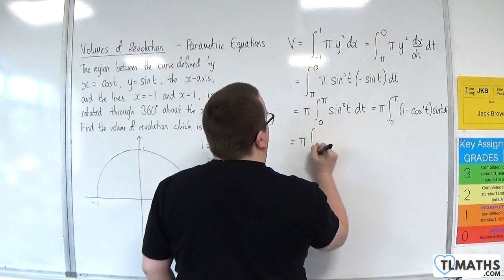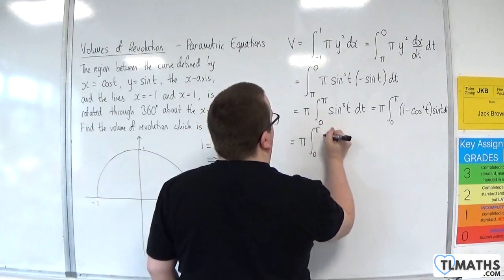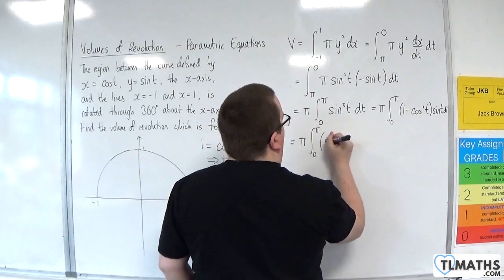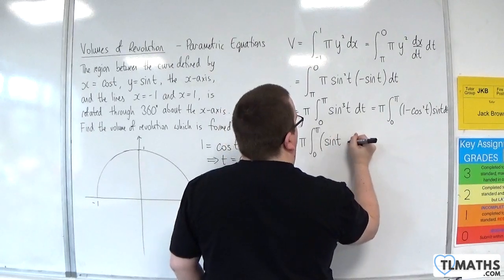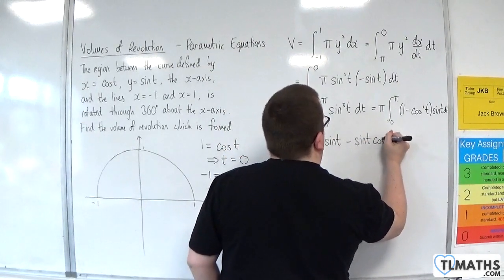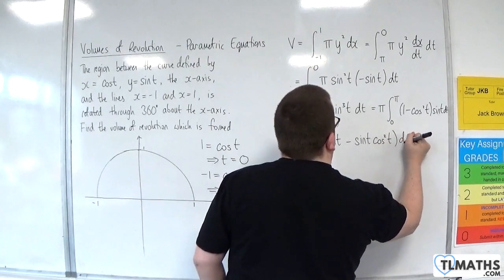So this is pi times the integral between 0 and pi of 1 minus cosine squared t, sine of t dt. So we're going to have pi times the integral between 0 and pi of, now multiply that through, sine of t, take away sine of t, cosine squared t dt.